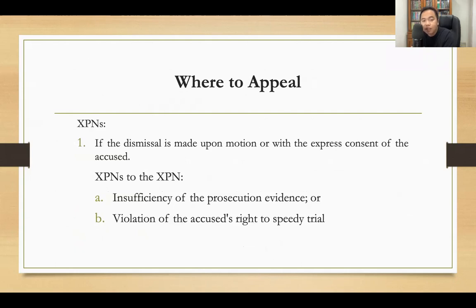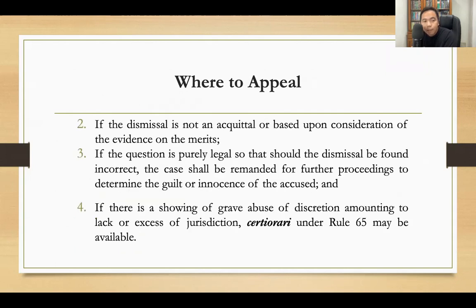There are exceptions. If dismissal is made upon motion or with the express consent of the accused — with an exception to that exception for insufficiency of prosecution evidence or violation of the accused's right to speedy trial, in which case the dismissal amounts to an acquittal and therefore there can be no appeal. If the dismissal is not an acquittal or based on consideration of evidence on the merits, and the question is purely legal, the case shall be remanded. If there is a showing of grave abuse of discretion, you file a petition for certiorari under Rule 65.